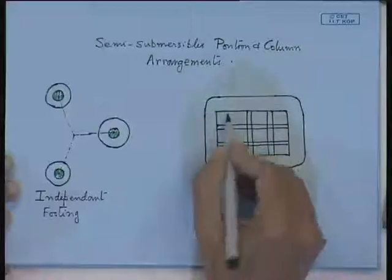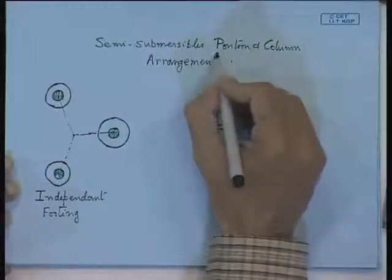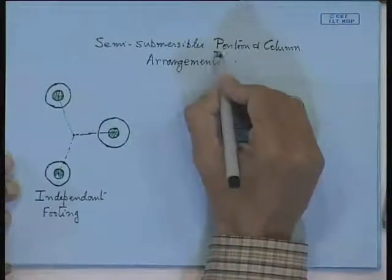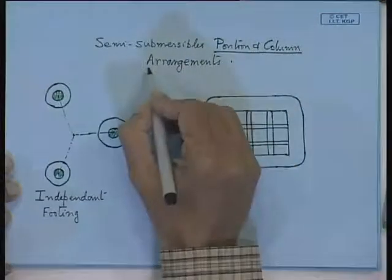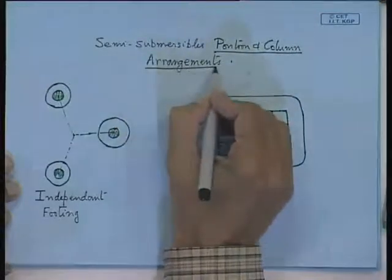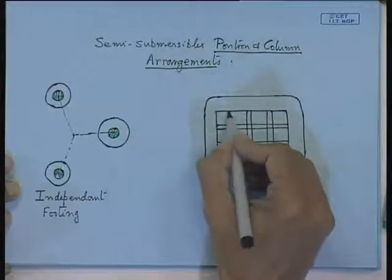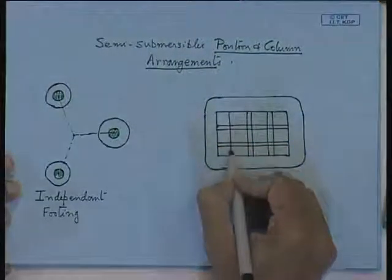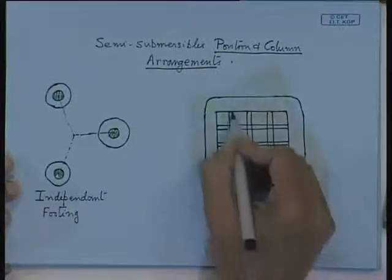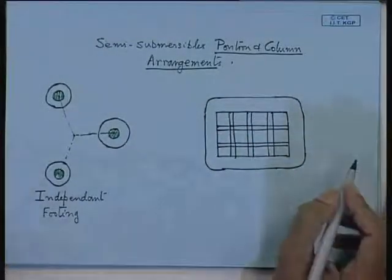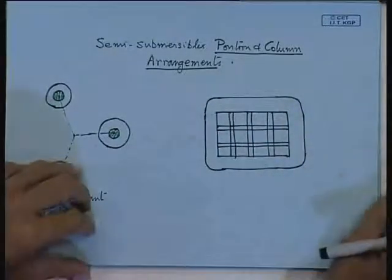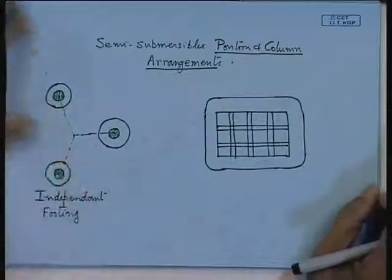We will continue with our discussion on semi-submersibles. The important thing that we will discuss is pontoon and column arrangements — how do you arrange the pontoon and column in your semi-submersible. This is a vital issue. The overriding principle that governs is the reduction in the wave force and motions.